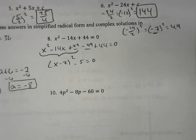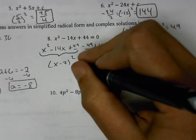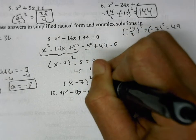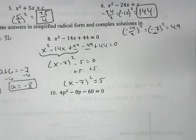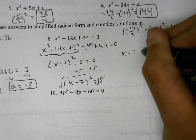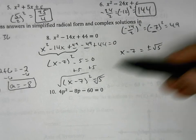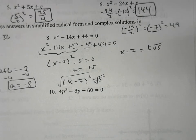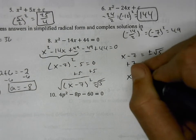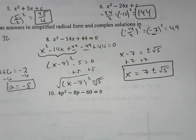This is now in vertex form, so we solve with PEMDAS backwards. The opposite of minus 5 is plus 5 to both sides, giving (x − 7) squared equals positive 5. Square root both sides: x minus 7 equals plus or minus the square root of 5. Add 7 to both sides: x equals 7 plus or minus the square root of 5. Those are our two answers.